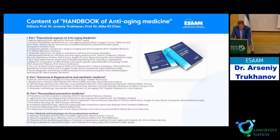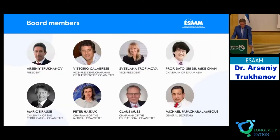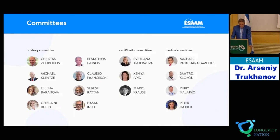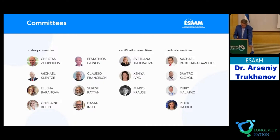The principal book we published last year is called Handbook of Anti-Aging Medicine. It has four parts: theoretical aspects of anti-aging medicine, advances in regenerative and aesthetic medicine, personalized preventive medicine, and methods and technologies for future personalized interventions. More than 20 leading scientists and medical doctors from Europe participated in this publication. Our board members include Mario Krause, Chairman of the Certification Committee; Michael from Greece, Chairman of the Medical Committee; and Professor Klaus Mus from Switzerland, Chairman of the Educational Committee. The Scientific Committee includes well-known specialists such as Professor Christos Zouboulis, one of the first presidents of our society, Suresh Ratan, Claudio Franceschi, and Statis Gones, General Director of the Pasteur Institute in Athens.